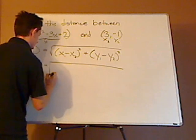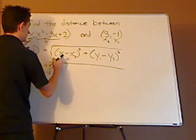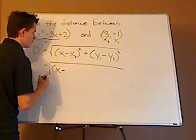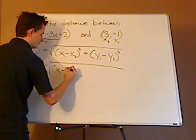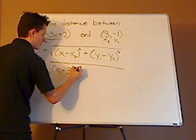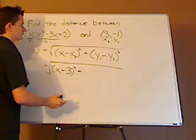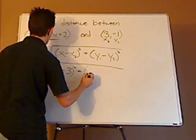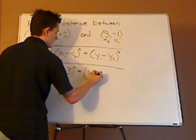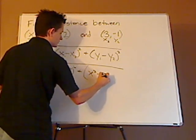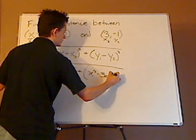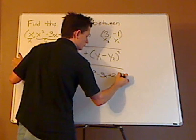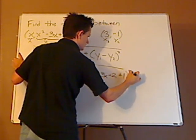So you have the square root. x1 is just x, so that's x parentheses minus 3, close parentheses squared. Plus your y1 is this whole thing, so that is x squared minus 3x plus 2 minus a negative, so that's going to be plus 1 squared.